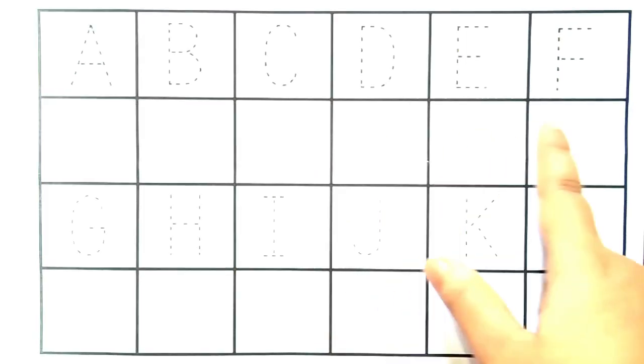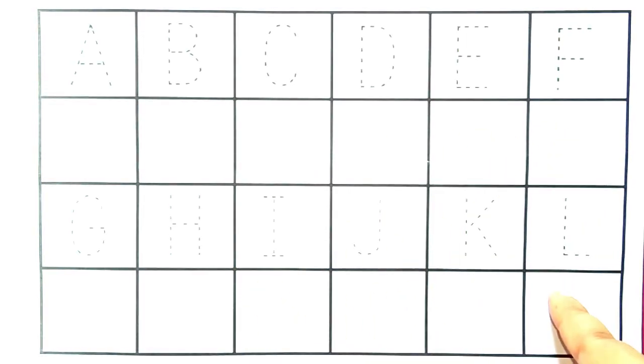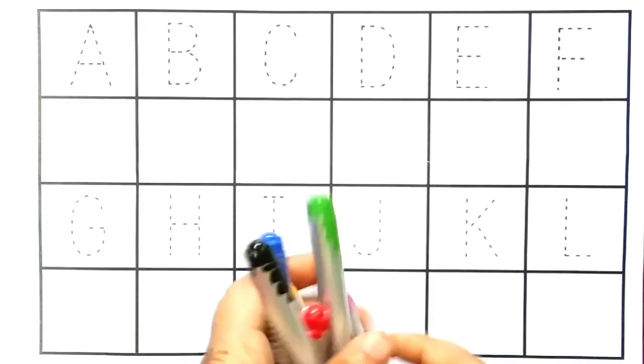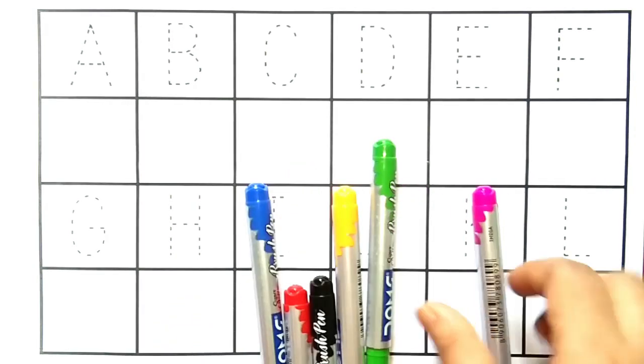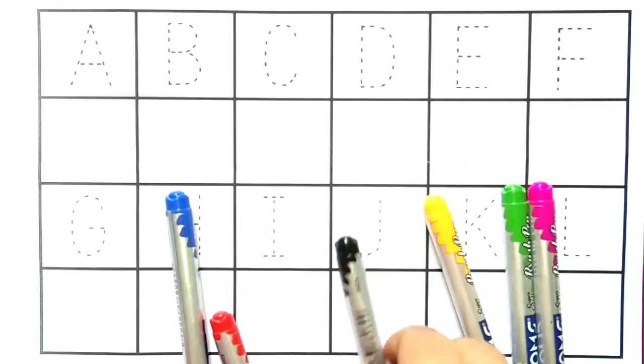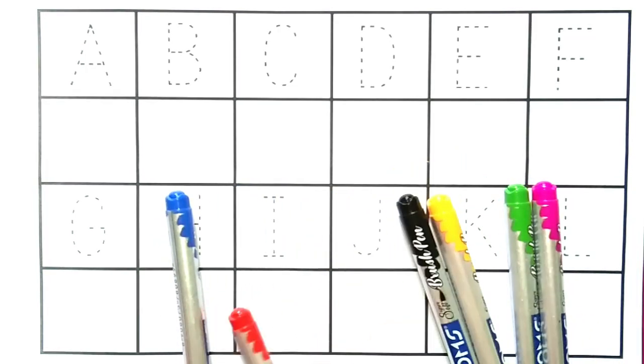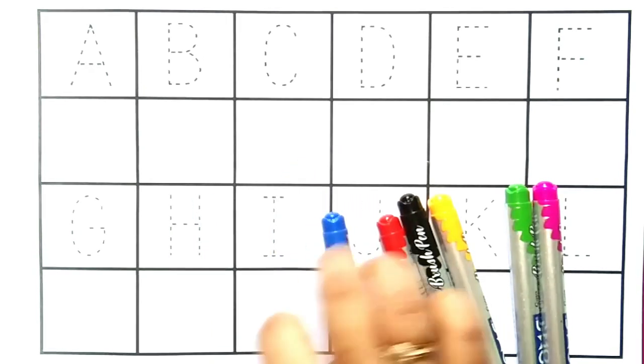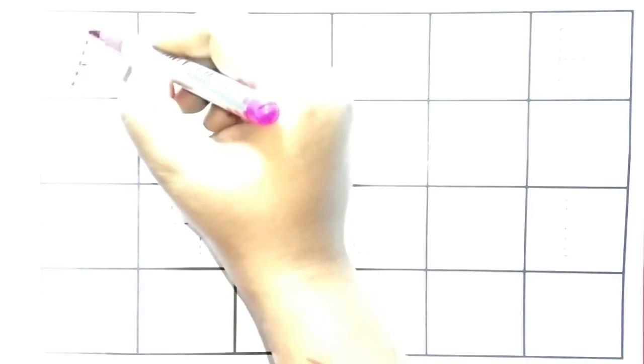Hello kids, welcome to my channel. Let's learn ABCD alphabets and 1 to 12 numbers counting. Let's learn some colors name: pink color, light green color, yellow color, black color, red color, and blue color.